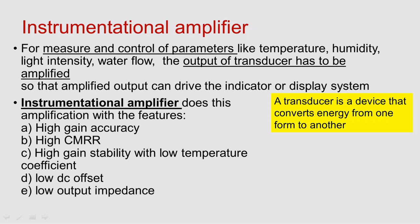Industries are increasingly preferring to use the instrumentation amplifier to amplify low signals during measurement. When you measure temperature, humidity, light intensity, or water flow using a sensor or transducer, that signal will be passed to the instrumentation amplifier. The instrumentation amplifier plays a vital role in amplifying your low signal, which will then be passed to the indicator system or display unit.